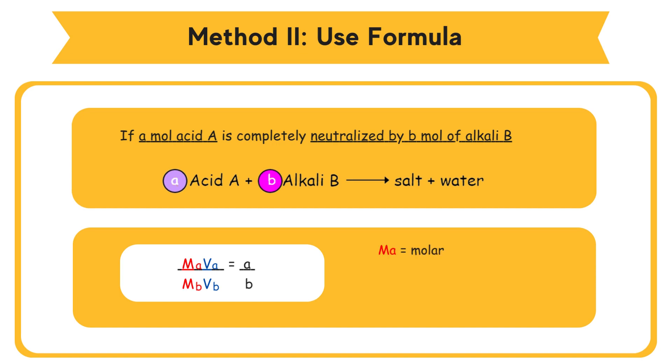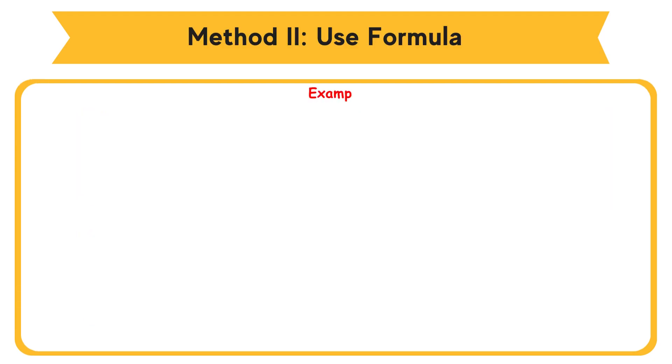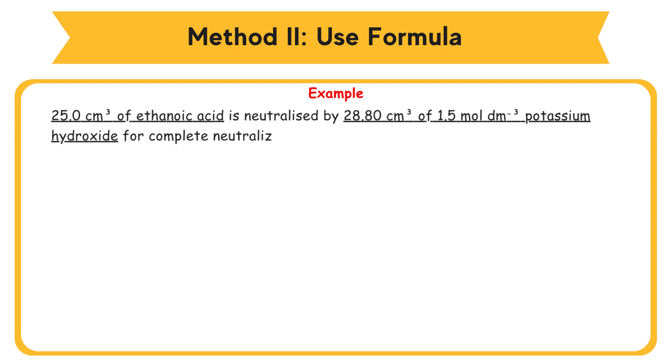MA = molarity of acid A. MB = molarity of alkali B. VA = volume of acid A. VB = volume of alkali B. Example: 25.0 cm³ of ethanoic acid is neutralized by 28.80 cm³ of 1.5 mol/dm³ potassium hydroxide for complete neutralization. Calculate the molarity of the acid.